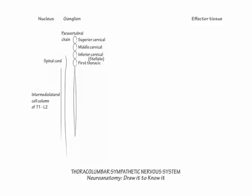Show the postganglionic fibers from the superior cervical ganglion terminate in the head and neck at the C1 through C4 dermatomal level. In the spinal cord, further specify the ciliospinal center of Budge, which spans from C8 to T2 in the intermediolateral cell column.